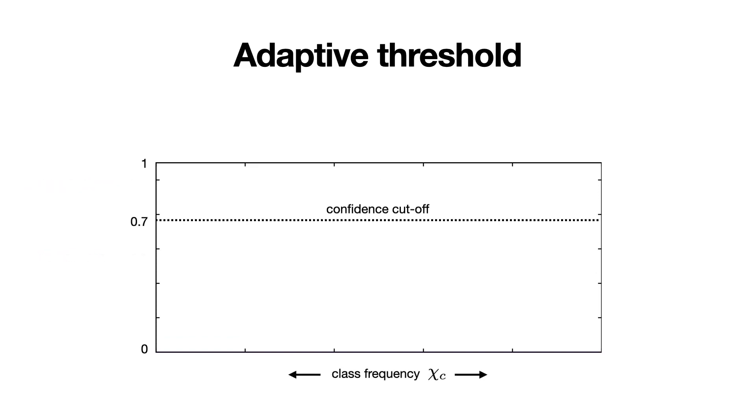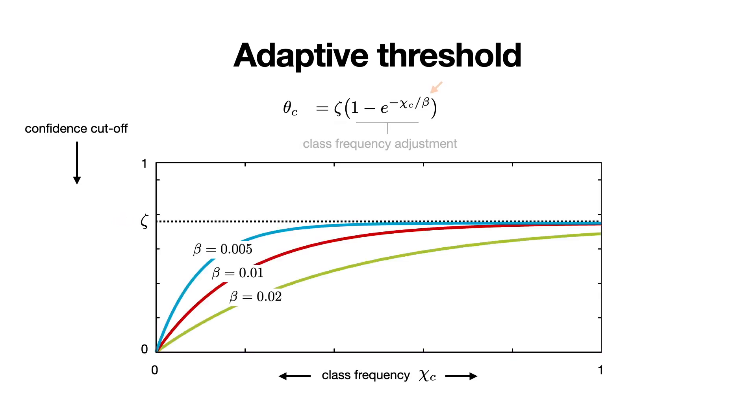To achieve that, we make our threshold dependent on an estimate of the class frequency. The first term in an adaptive threshold specifies an upper bound on a threshold using the hyperparameter zeta. The second hyperparameter beta determines by how much we want to readjust the threshold based on the class frequency. Additionally, we make our threshold dependent on the top confidence of the class to make it sample specific.